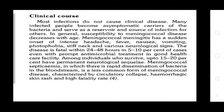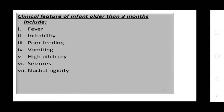The disease can be fatal within 24 hours. Five to 10% of cases die even with prompt antimicrobial treatment and good healthcare. Among individuals who survive, up to 15–20% have permanent neurological sequelae. Meningococcal septicemia is a very rapid dissemination of bacteria in the bloodstream, characterized by circulatory collapse, hemorrhagic skin lesions, and high fatality rate. Clinical presentation in infants older than 3 months includes fever, irritability, vomiting, high-pitched cry, and seizures.